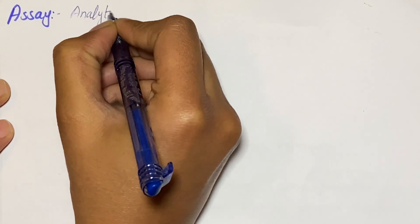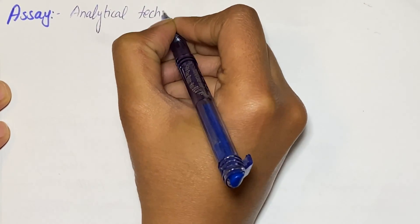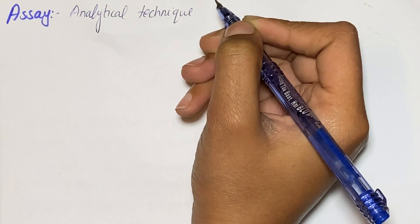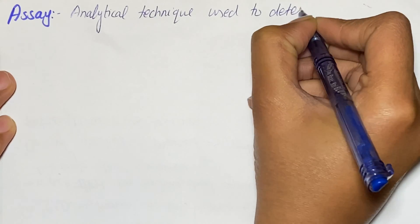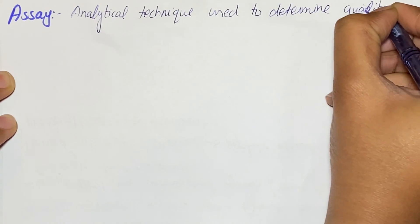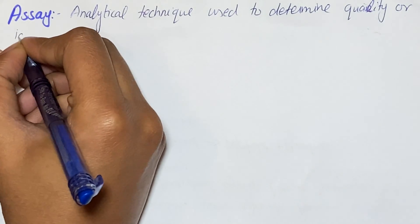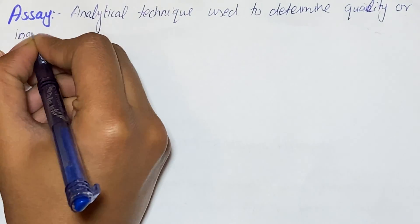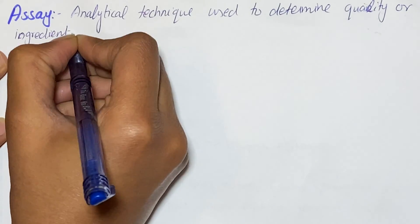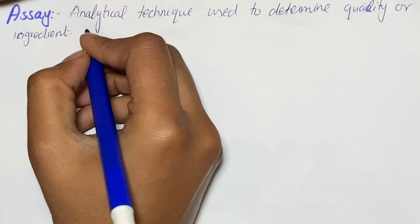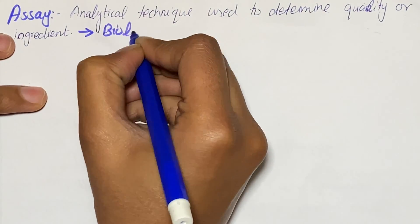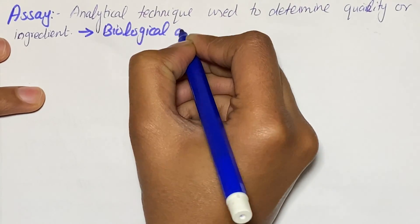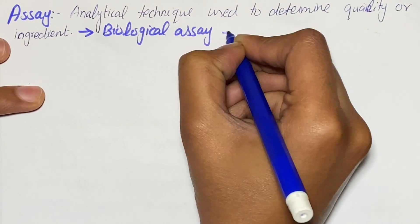In today's video we are going to be talking about assay. Assay is actually an analytical technique or testing which is used to determine quality or ingredients present in a sample. There are different types of assay and you select the one which is required by your sample. The first type is biological assay or bio assay, and the second one is chemical assay.